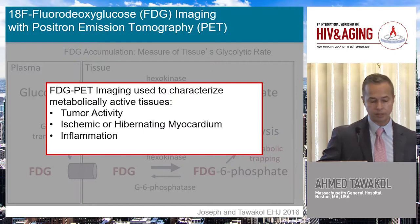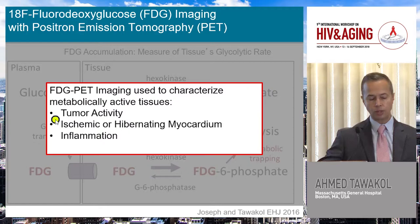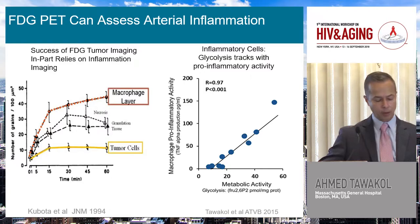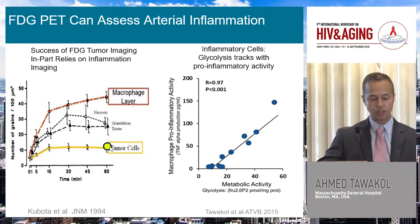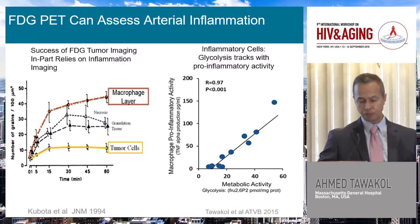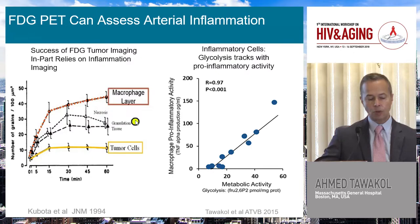We take advantage of this clinically to look at tumors, ischemic or hibernating myocardium, and inflammation. If you inject FDG into a mouse model, you'll see it localizes to tumor cells. Most clinicians will have seen FDG in tumors, as it is the primary way to diagnose and stage tumors. What you might not realize is that much of the FDG is actually localizing to the inflammatory cells — the tumor-associated macrophages.